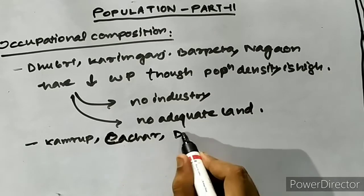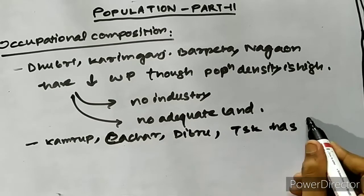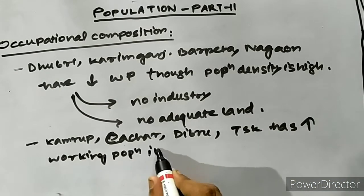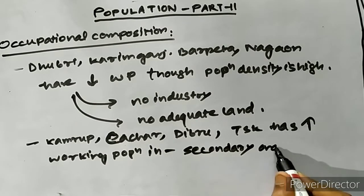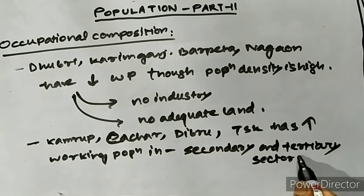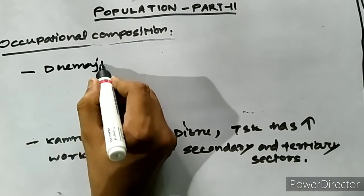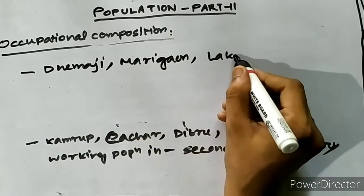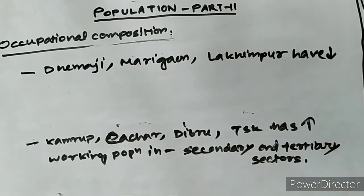The districts of Kamrup, Cachar, Dibrugarh, and Tinsukia have a greater proportion of working population engaged in secondary sectors such as industrial sectors and tertiary sectors such as service, transport, and communication. On the other hand, Marigaon, Lakhimpur, and Dhemaji districts have little employment opportunities in these sectors.